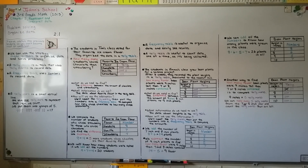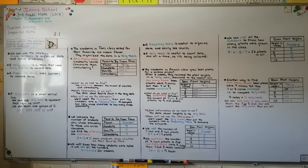Remember, a frequency table is useful to organize data and easily see the results — the numbers — and a tally table is useful to count data one at a time as it's being collected. I hope you have a wonderful day and I'll see you for the next lesson. Bye.